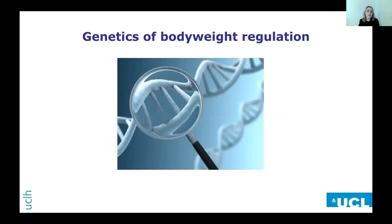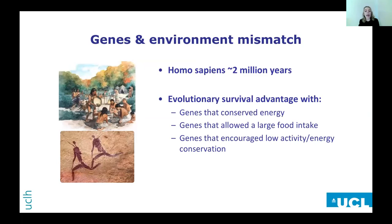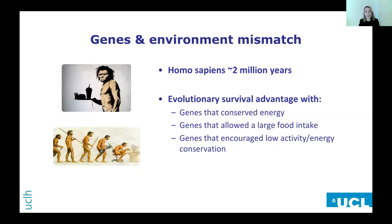What about the genetics of body weight regulation? If we think about the majority of human evolution, food has been scarce — it's only in the last 100 years that food has been readily available. So it was an evolutionary advantage if you had genes that allowed you to consume a large amount of energy. Over the course of evolution we have selected for genes that encourage us to eat and to conserve energy. The problem is our environment has changed but our mechanisms that regulate body weight haven't. A diet to the body is the modern-day equivalent of a starvation or a famine.